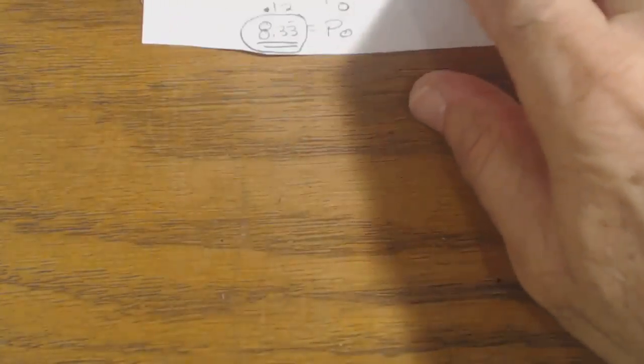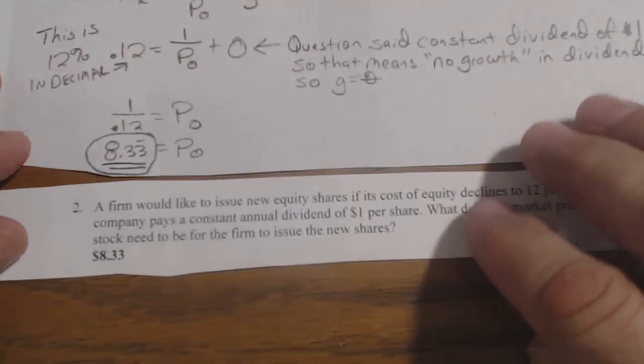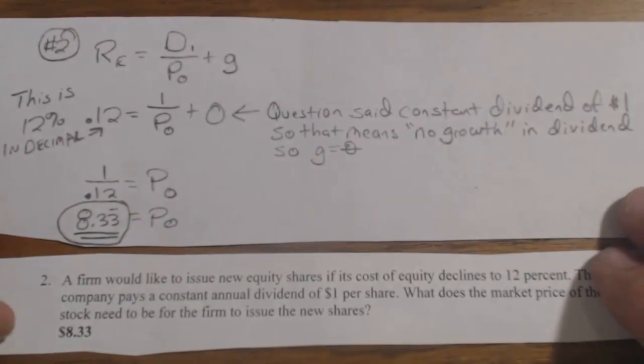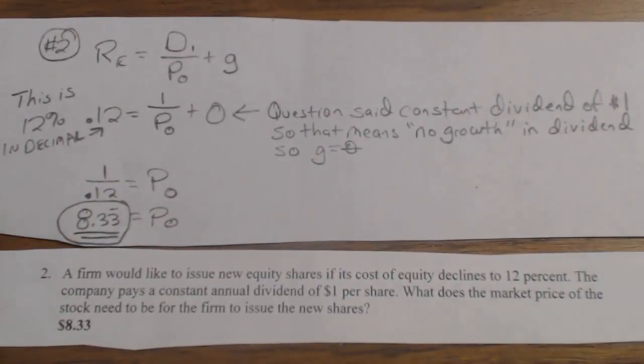Problem number 2 is a similar type of problem. A firm would like to issue new equity shares if the cost of equity declines to 12%. The company pays a constant dividend of $1 per share, so there is no growth rate. If it's a constant annual dividend,